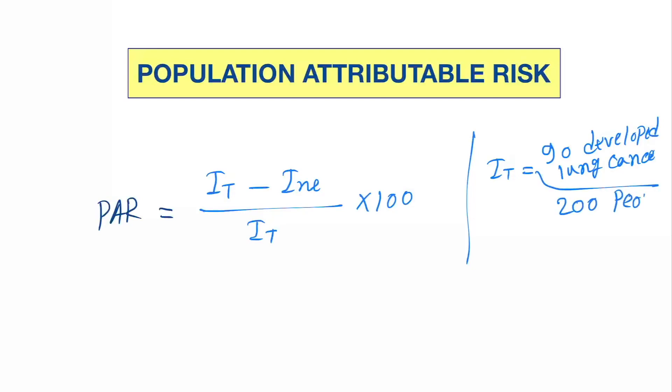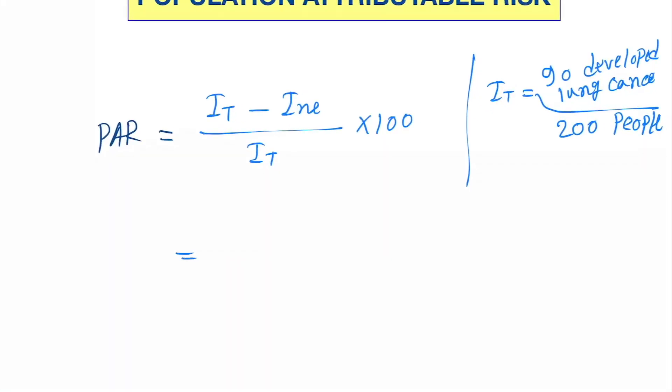Next is population attributable risk. The formula is PAR equals (incidence of total minus incidence of non-exposed) divided by incidence of total times 100. Incidence of total equals 90, the summation of these two. Here, let's take 90 cases of lung cancer and the total population is 200 because 100 smokers and 100 non-smokers.